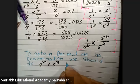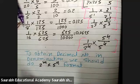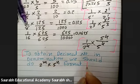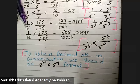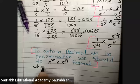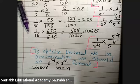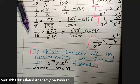The important formula: for obtaining a decimal, we use 2 raised to m and 5 raised to n, where m equals n — meaning the exponent of both should be equal, the same exponent for both.